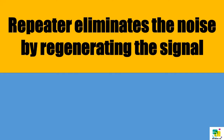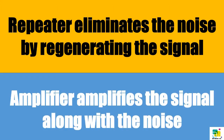A repeater eliminates the noise by regenerating the signal, whereas an amplifier amplifies the signal along with the noise.